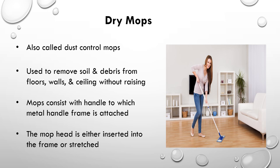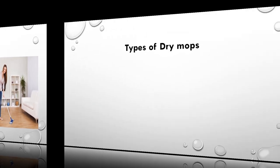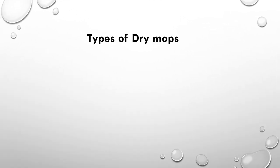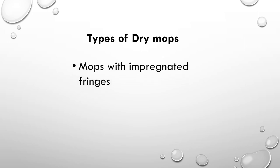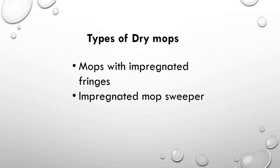These mops generally consist of a handle to which a metal frame is attached. The mop head is either inserted into the frame or stretched over it, according to the type. There are mainly four types of dry mops used in housekeeping: mops with impregnated fringes, impregnated mop sweeper, static mops, and disposable mops.